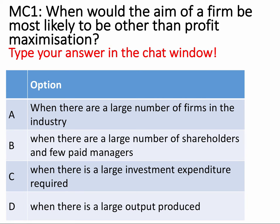So, over to you — this is where we bring a bit of interactivity to our webinar. There will be four questions; if you're watching the YouTube version, take a moment to press pause and think about your answer. Here's the question: when would the aim of a firm be most likely to be other than profit maximisation? The correct answer is B. This goes back to what we were talking about regarding the agency problem.